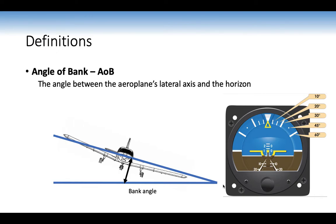Definition — angle of bank: the angle between the aeroplane's lateral axis and the horizon. The lateral axis goes from wingtip to wingtip. It's also marked on the artificial horizon: 10, 20, and 30 degrees are marked; 45 degrees is between 30 and 60; 60 is further over; and 15 would be between 10 and 20.